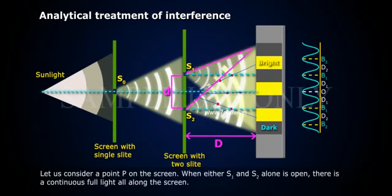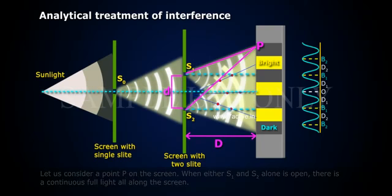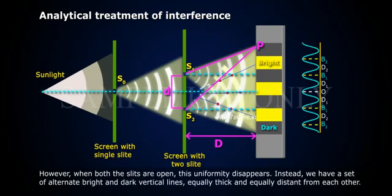Let us consider a point P on the screen. When either S1 or S2 alone is open, there is a continuous full light all along the screen. However, when both the slits are open, this uniformity disappears.